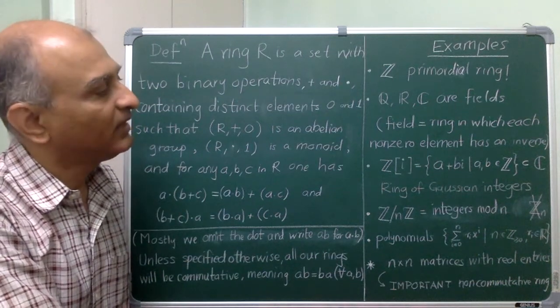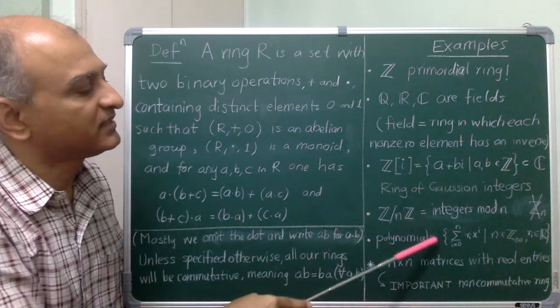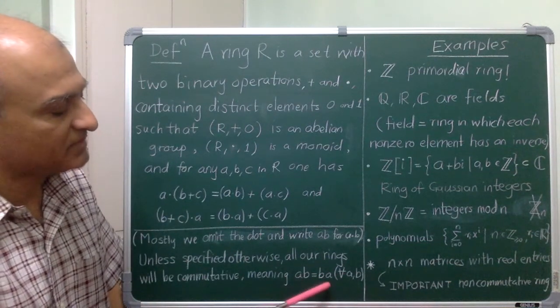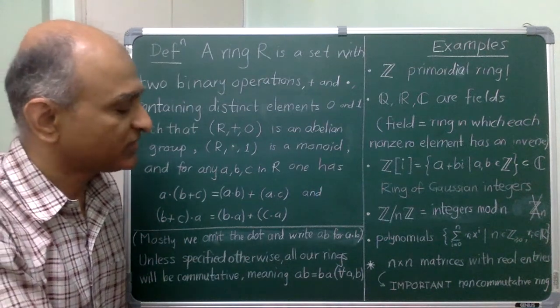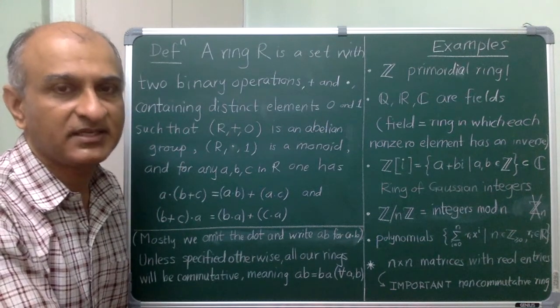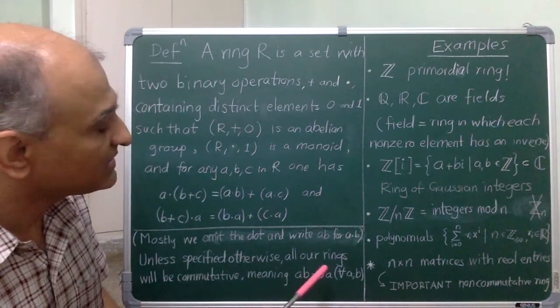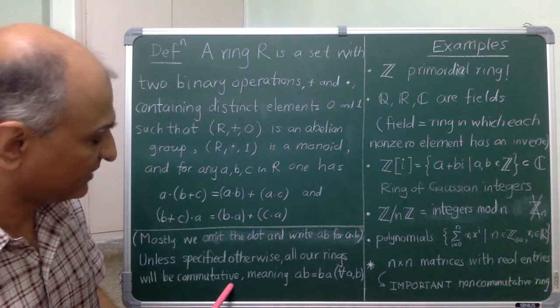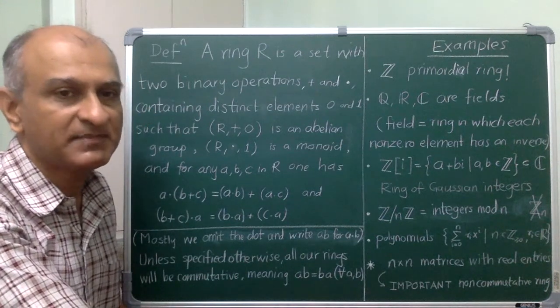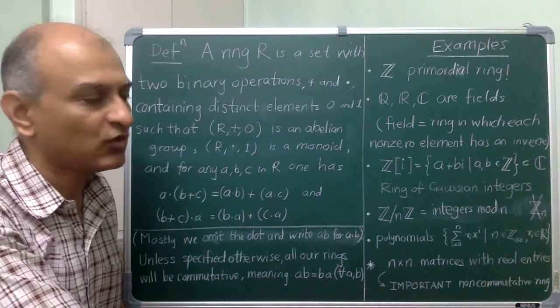All right, so having seen these examples there are a couple of things worth remarking. One is that notice that all of these rings have the property that when I multiply things the order does not matter. So, I have ab equals ba, right? So, such rings are called commutative rings and for us most of the rings that we will be interested in will be commutative. So, therefore, we make this convention that unless I specify otherwise, whenever I say ring it will mean a commutative ring. Okay, so please keep this in mind. I will try to say commutative ring explicitly as much as possible but unless I specifically say that the ring could be non-commutative I always mean a commutative ring.